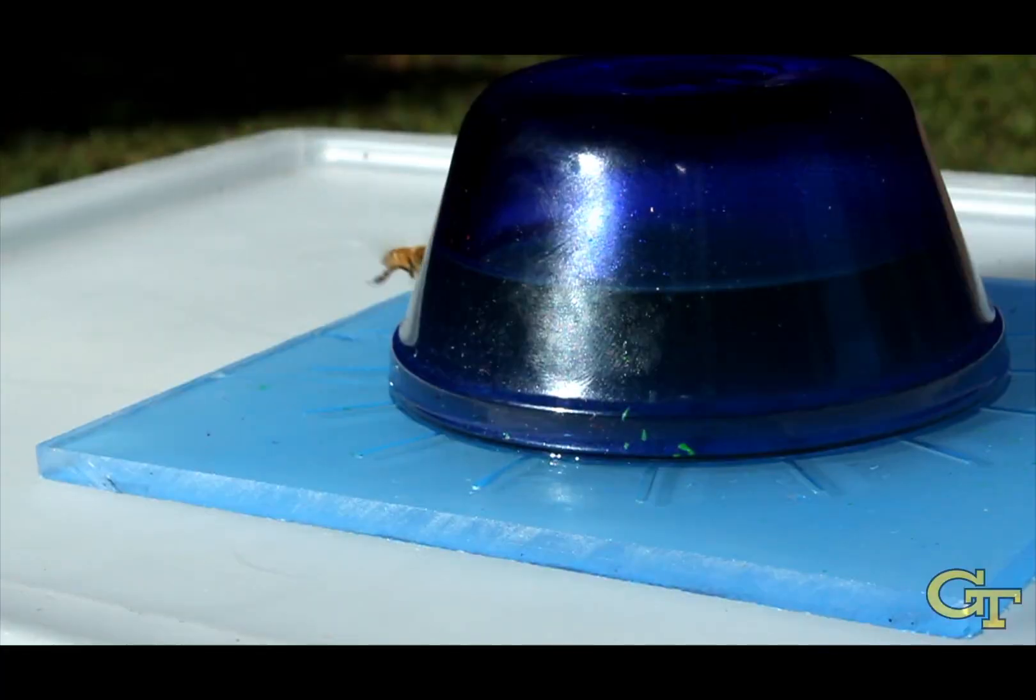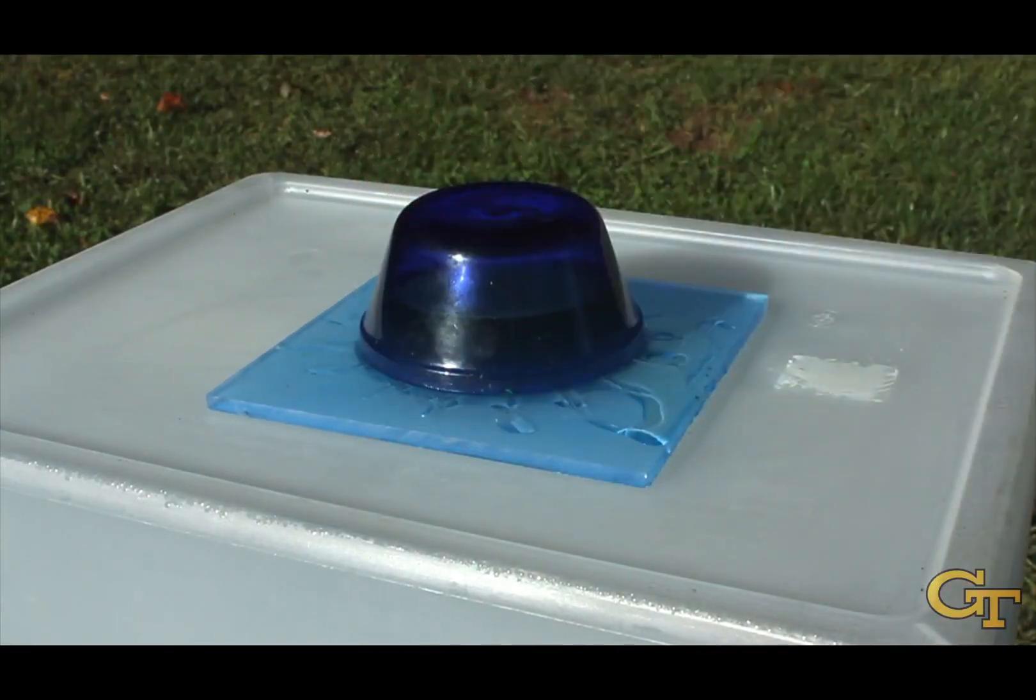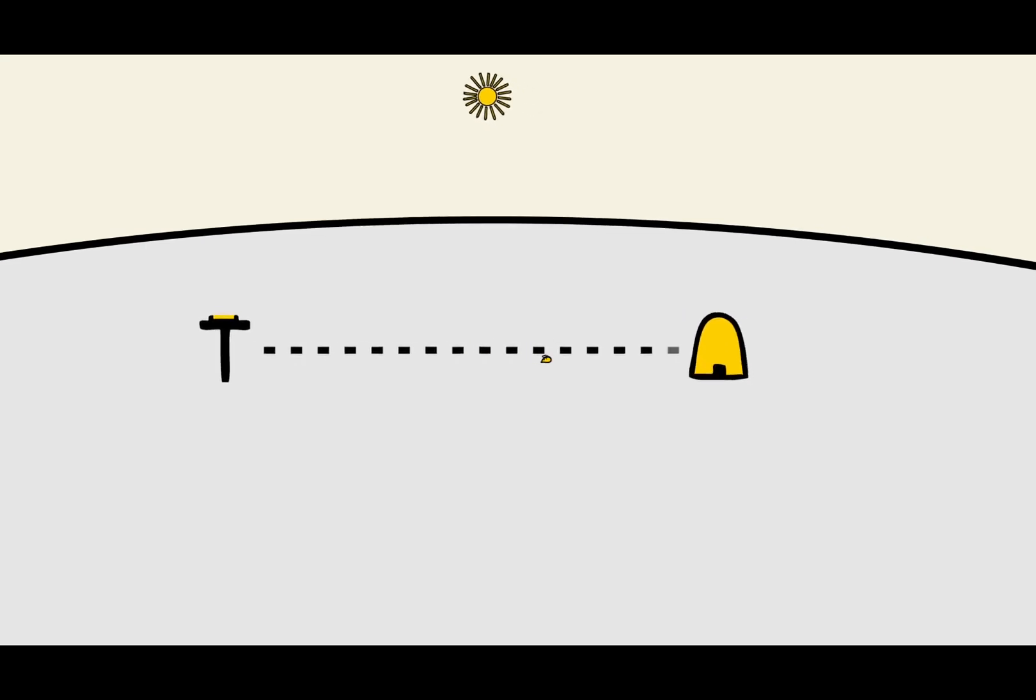A foraging honeybee will eventually discover a new food source, such as a freshly blooming flower or artificial feeder placed by a scientist. After this visit, an interesting thing happens.